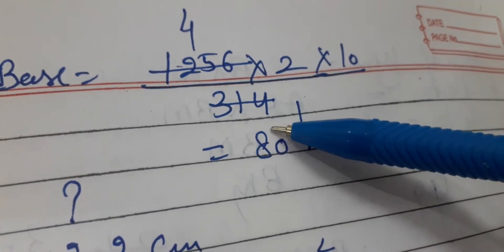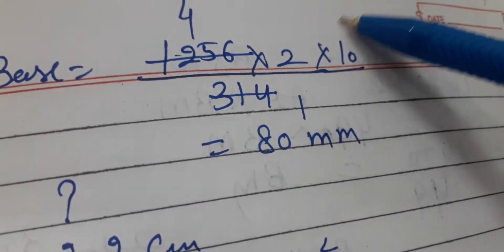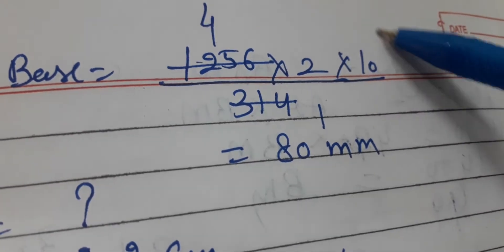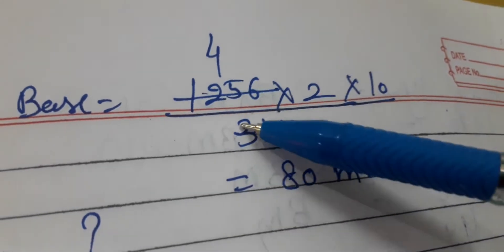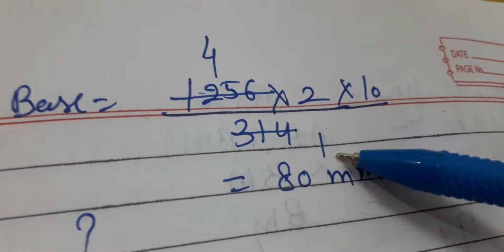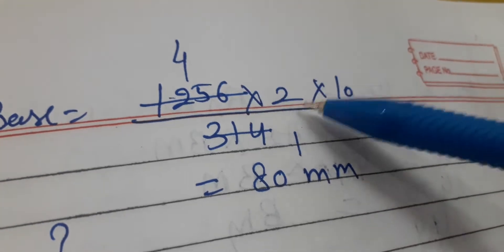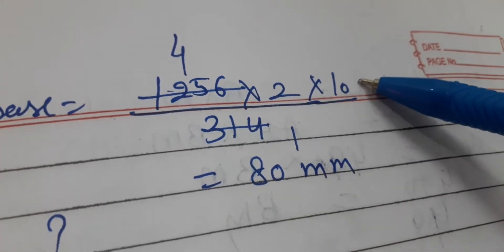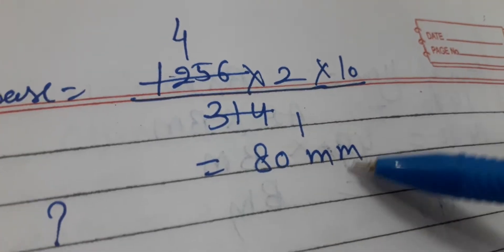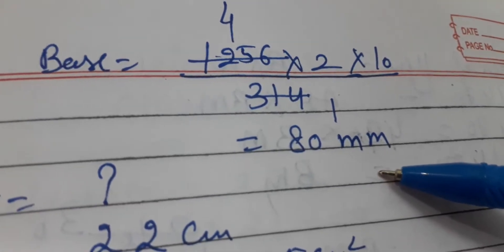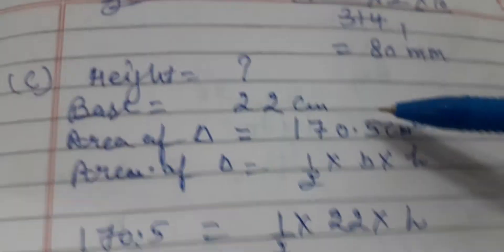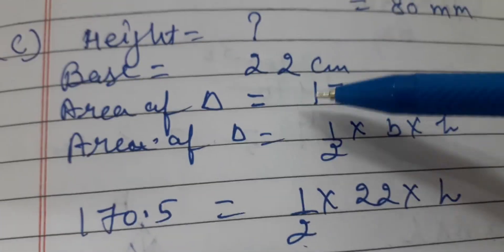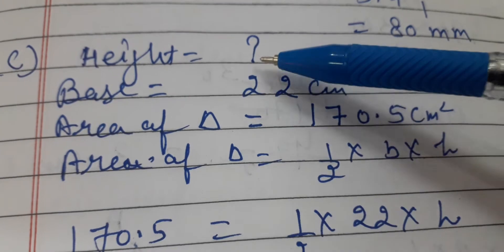When I cancel 314, dividing: 4 eights are 8, giving us 80 millimeters as the answer for part b — that is the base. Now part c: height is not given, base is given and area is given. I will use the same formula for area of a triangle.